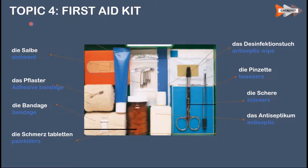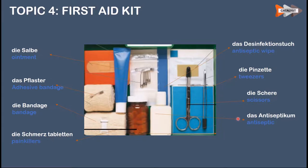Topic four is the common things that you find in a first aid kit. Especially at the time of an emergency, it's necessary that you know the names of these items. Die Salbe means ointment. Das Pflaster means adhesive bandage. Die Bandage means bandage. Die Schmerztabletten means painkillers. Das Desinfektionstuch means antiseptic wipe. Die Pinzette means tweezers. Die Schere means scissors. Das Antiseptikum means antiseptic.